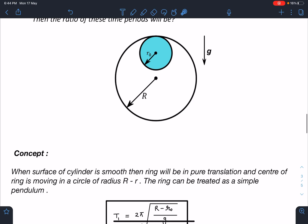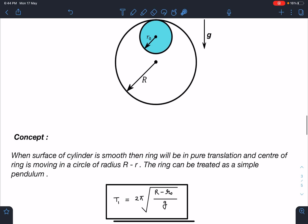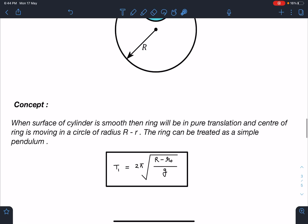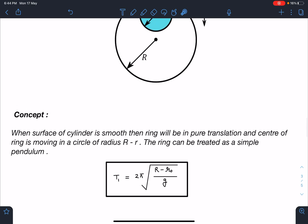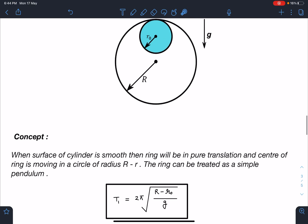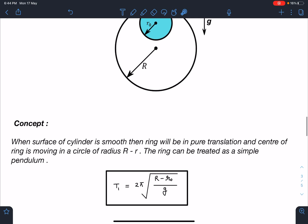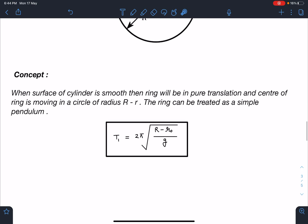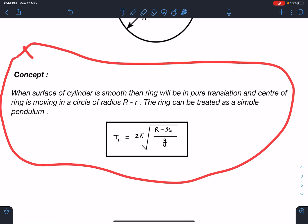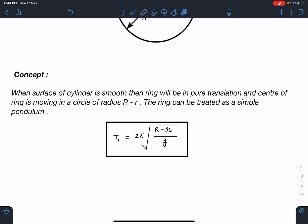So let's discuss the concept part here. The first part is quite easy. When the surface of cylinder is smooth, then the ring will be in pure translation and the center of ring will be moving in a circle of radius R minus R0. So here we can treat this ring as effective pendulum of length R minus R0 and we can use the direct formula for simple pendulum.